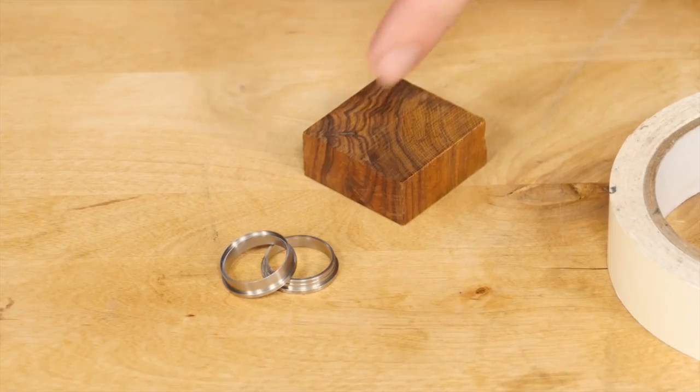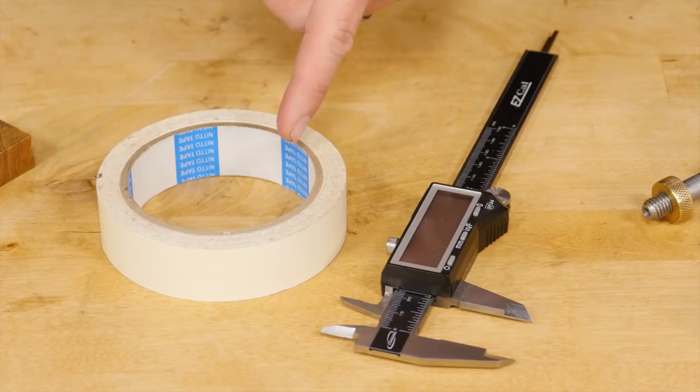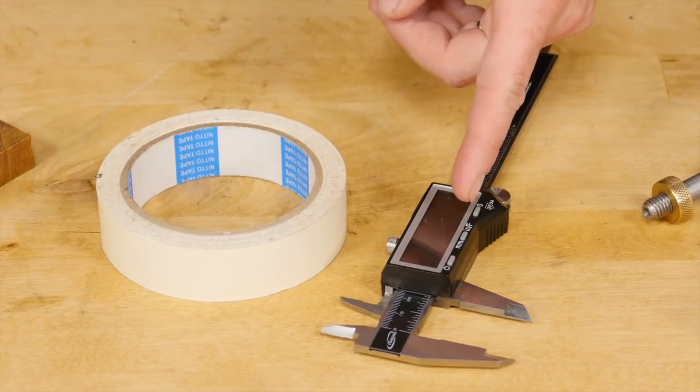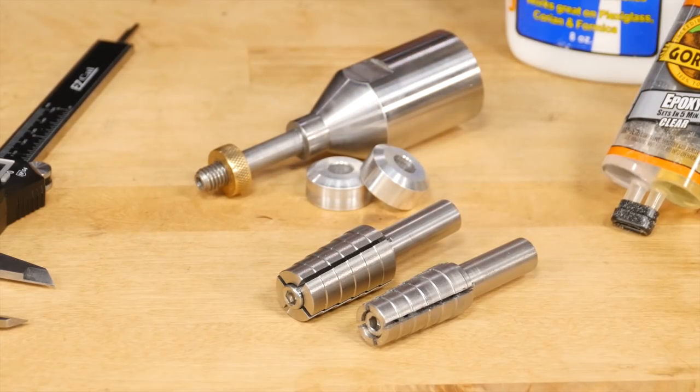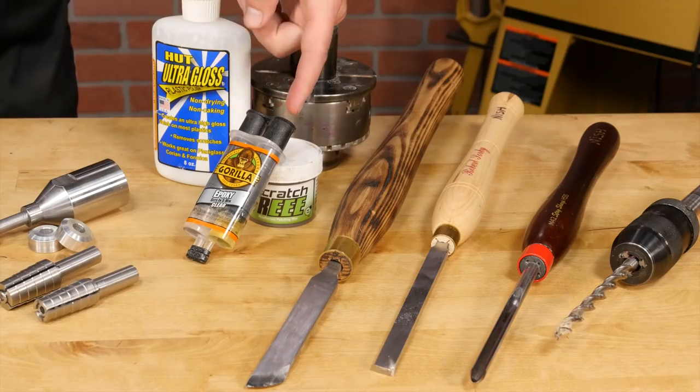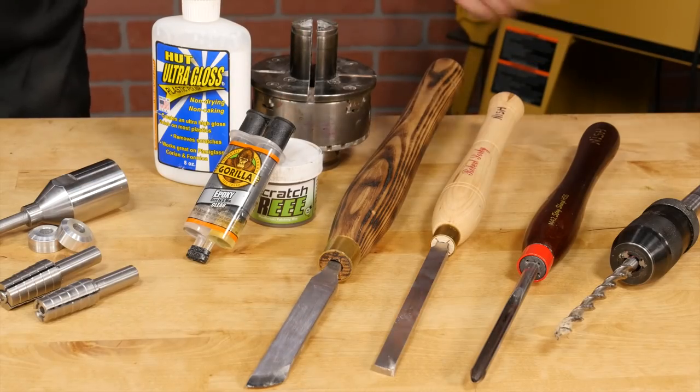For this project you're going to need a two-piece ring core, a ring blank of your choice, some double-sided tape, digital calipers, a ring mandrel or ring chuck of your choice, some epoxy and standard turning tools and supplies.